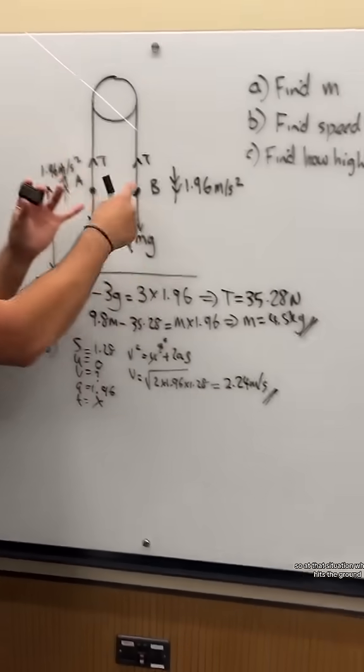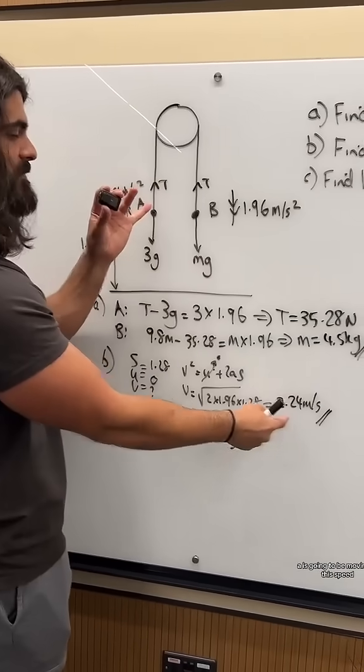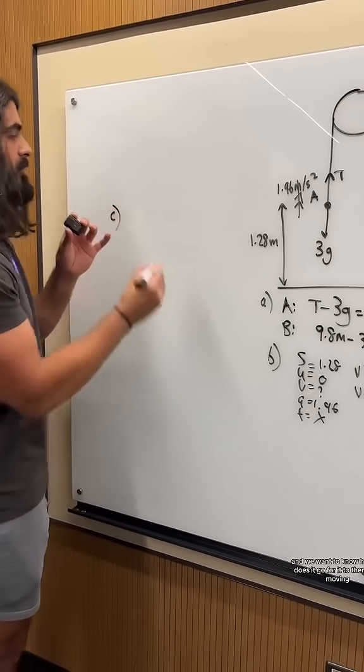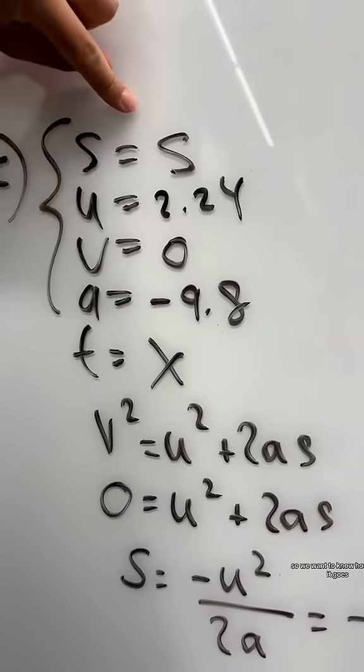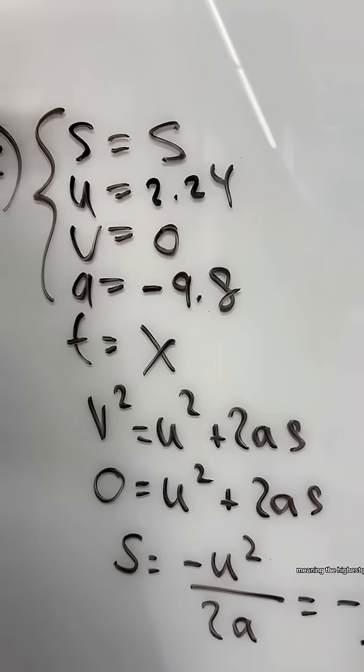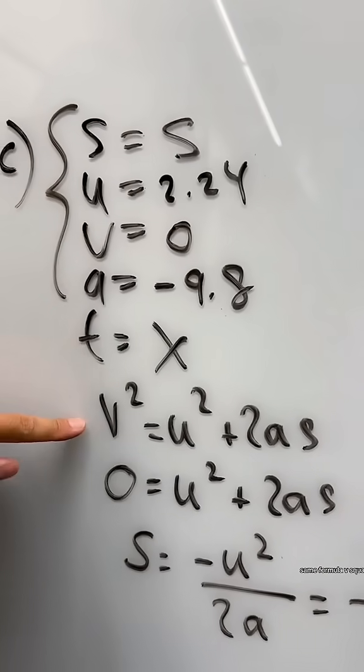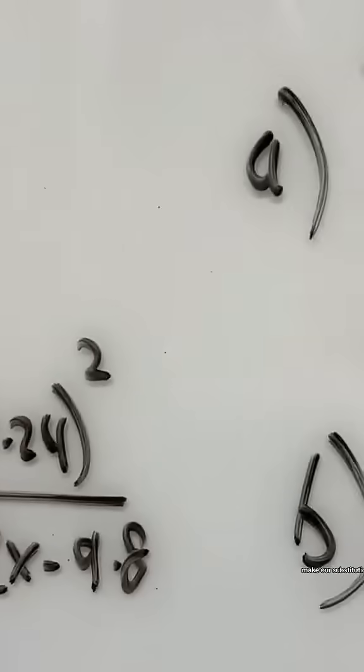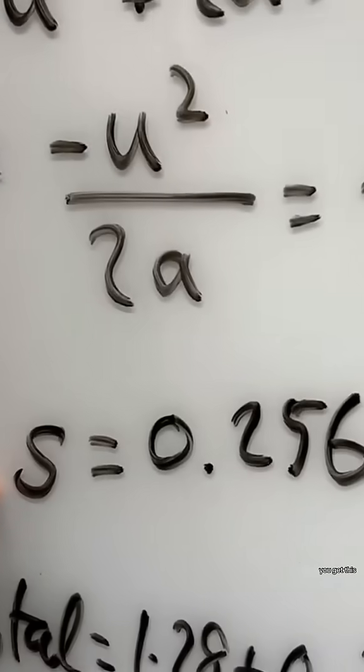So at that situation where B hits the ground, A is going to be moving at this speed, and we want to know how far does it go for it to then stop moving. So we want to know how high it goes. The initial speed in the subsequent motion is 2.24. We want to know when does it stop, meaning the highest point. It's moving freely under gravity. Same formula, V squared. We rearrange it nicely for S, make our substitutions. When you use your calculator, you get this.